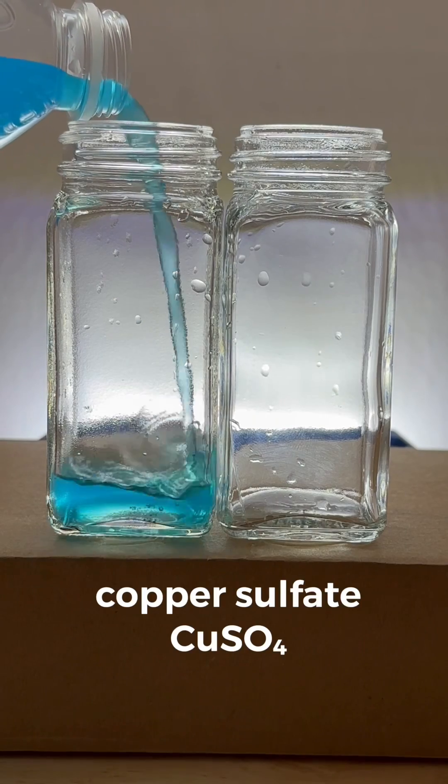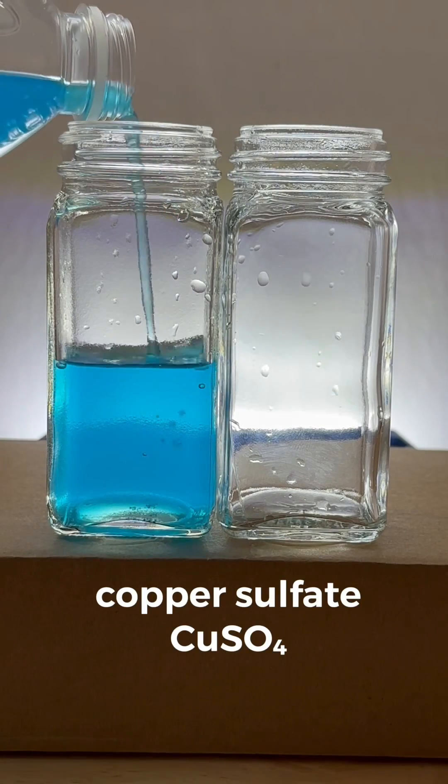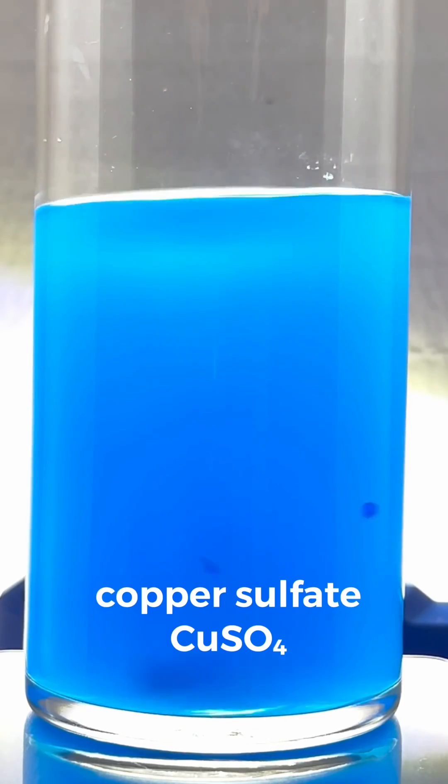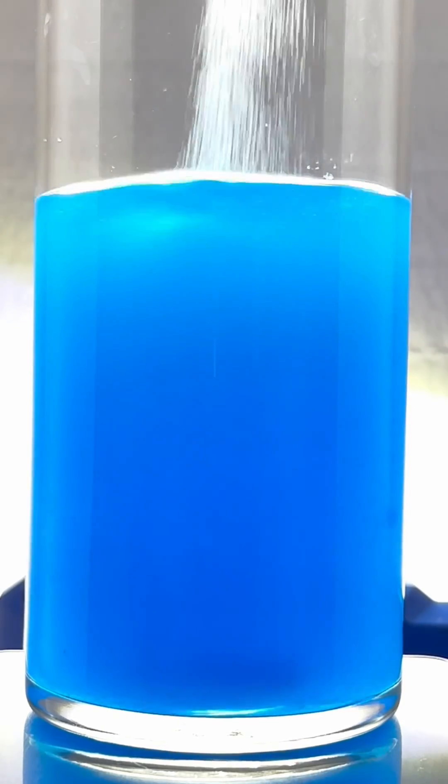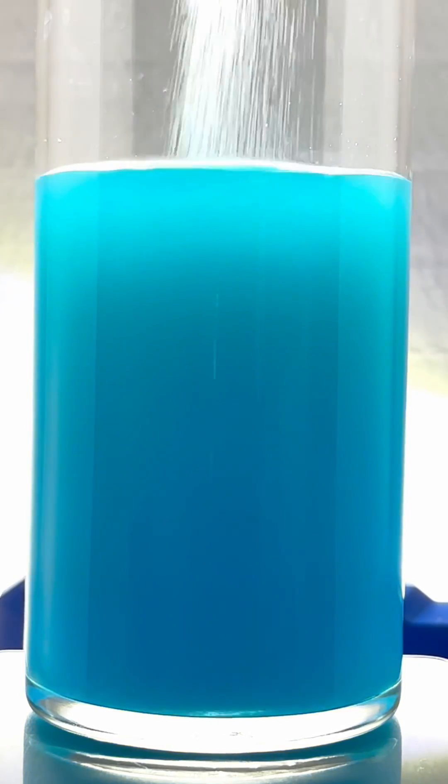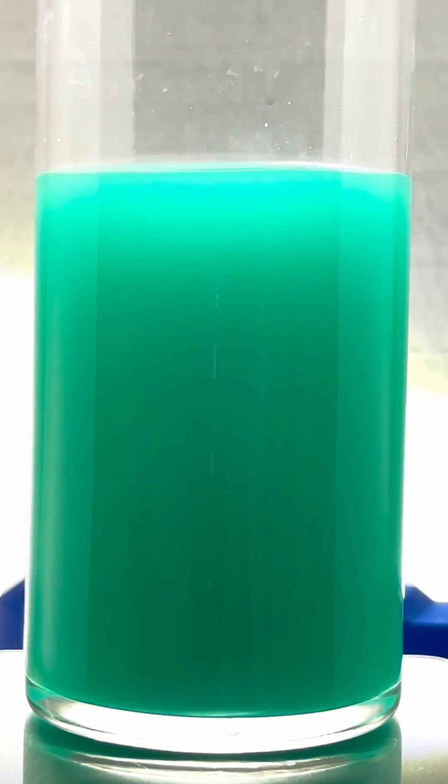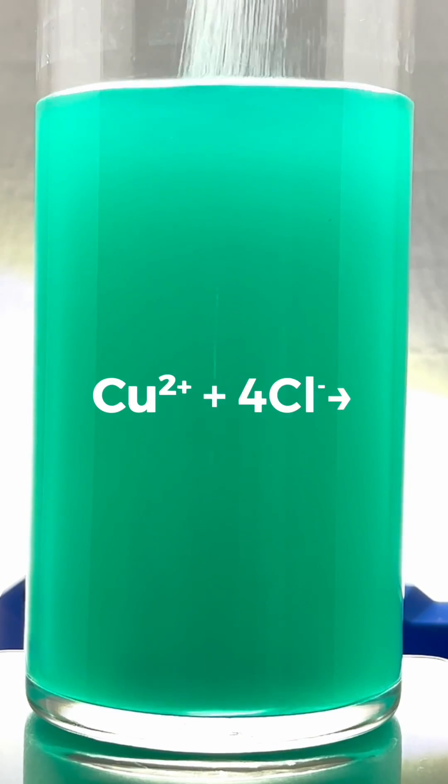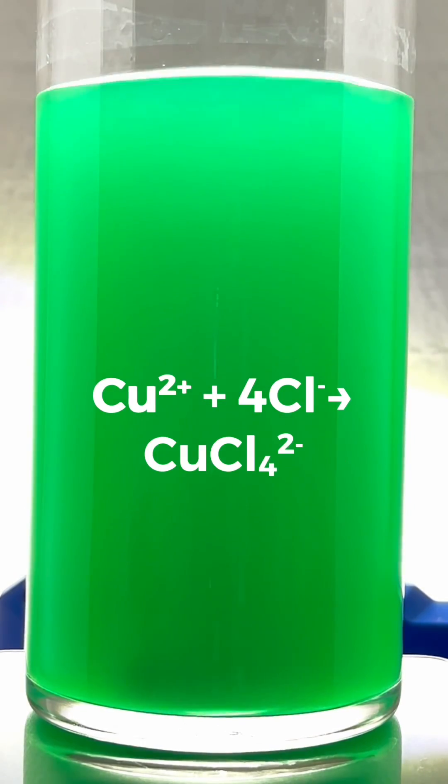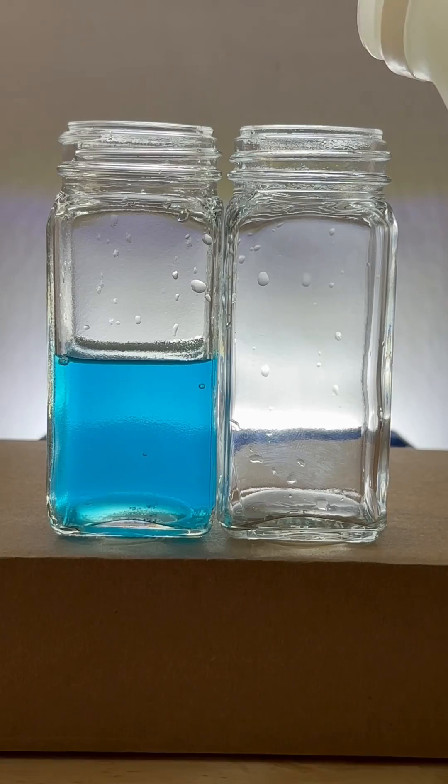Solutions of copper sulfate contain copper ions and have a beautiful blue color, but check out what happens when I add some salt to the solution of copper sulfate. The color shifts to green. This is because the copper ions react with the chloride ions in the salt to form a green colored copper chloro complex.